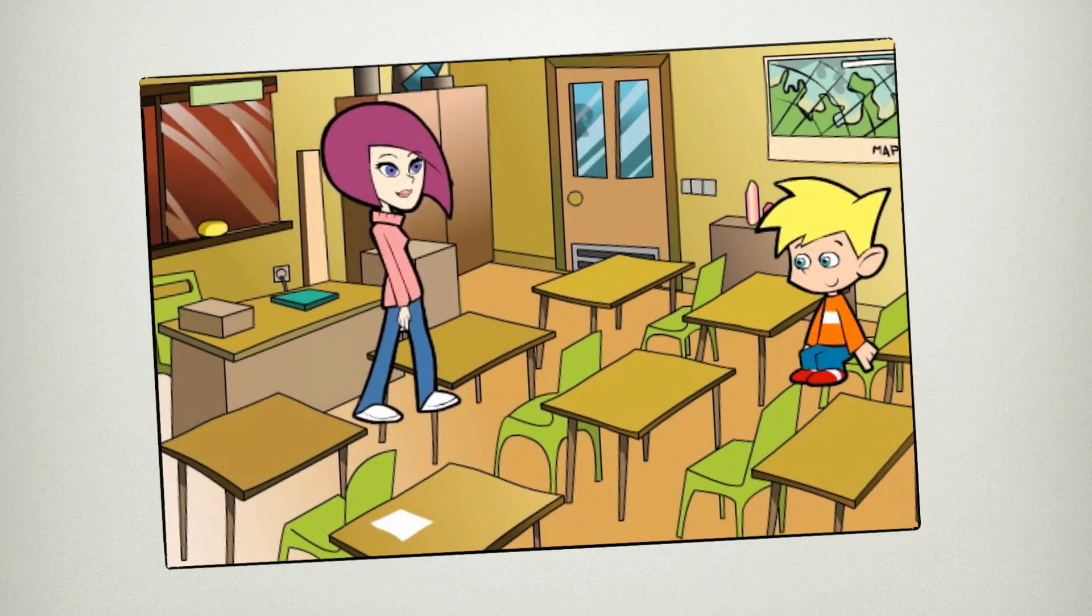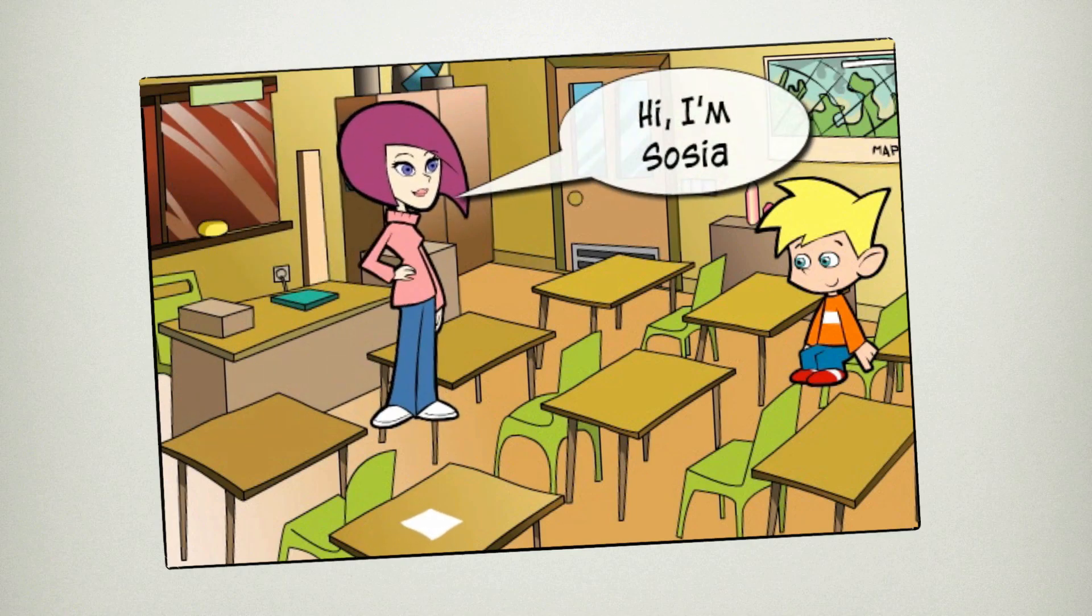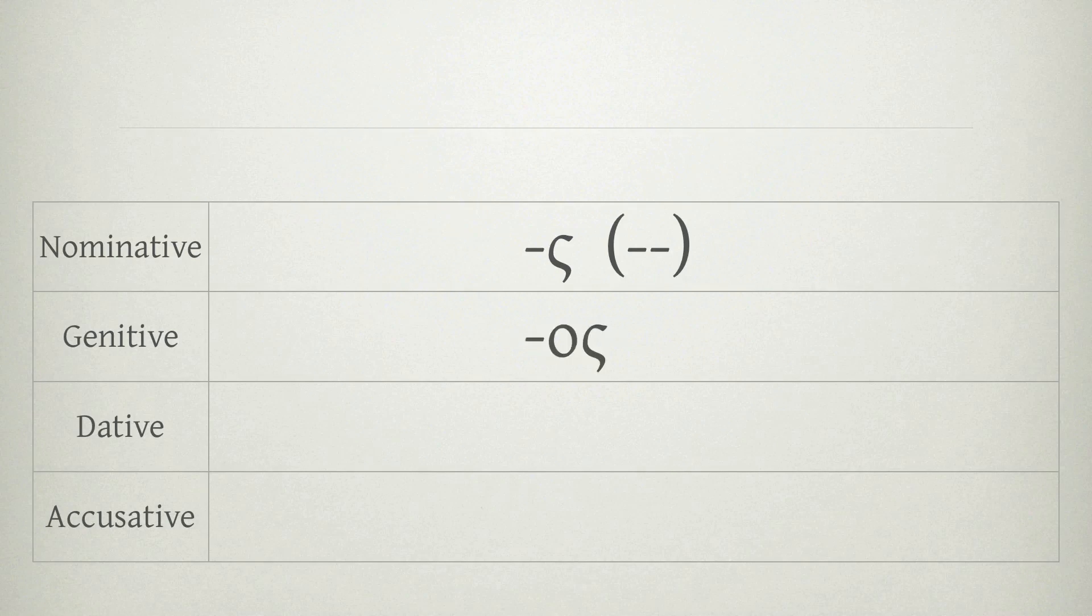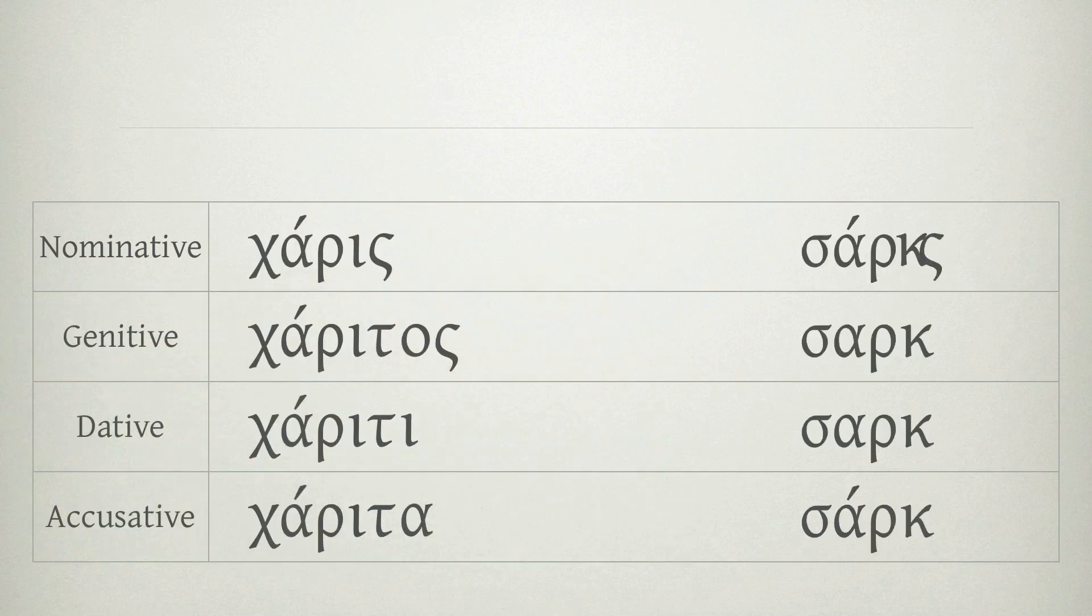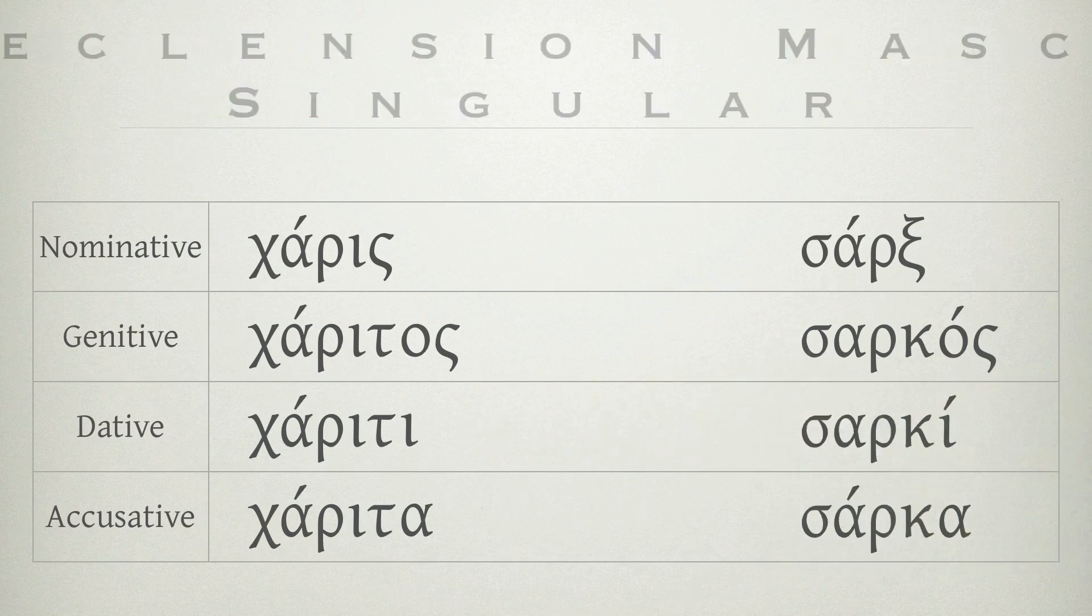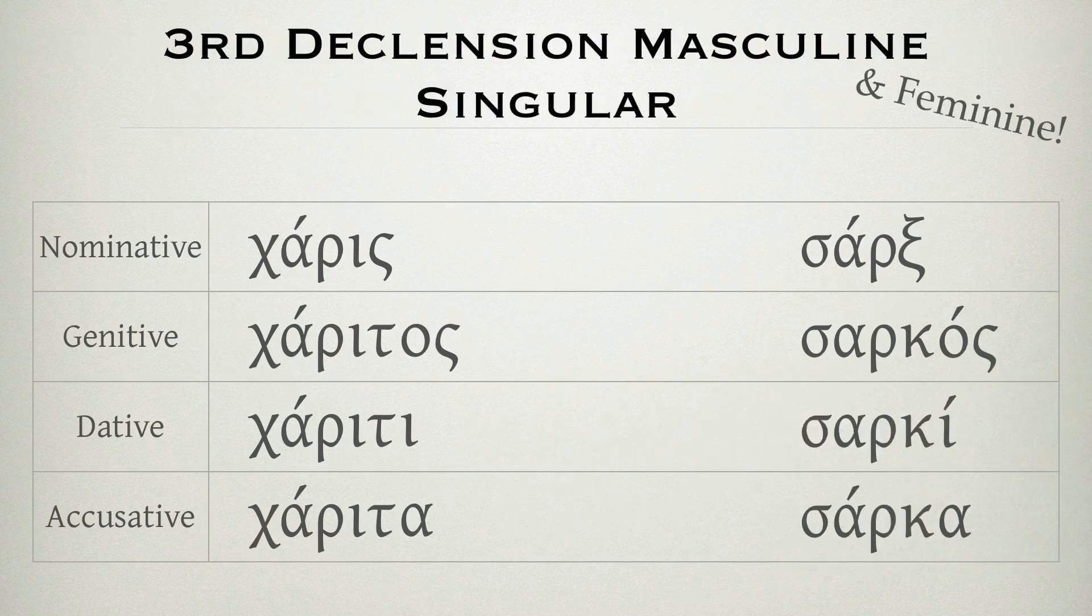There was a student, had a friend, and Saucy-R was her name. S-O-S-E-A, S-O-S-E-A, S-O-S-E-A, third declension, masculine, singular.